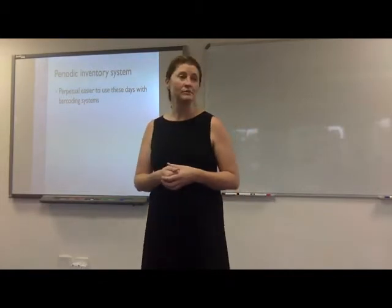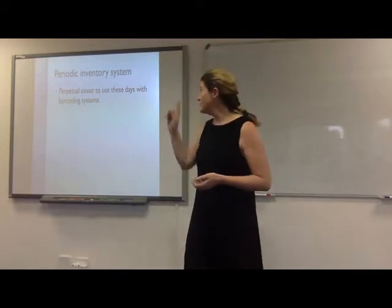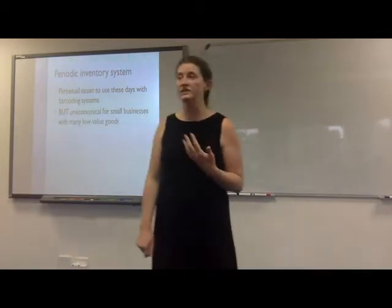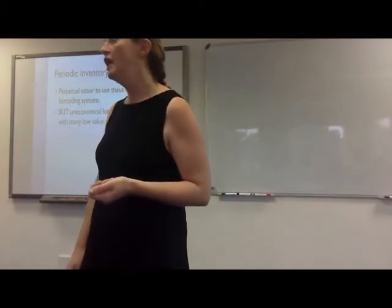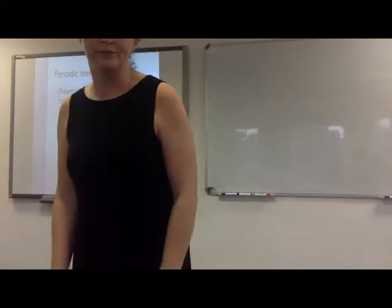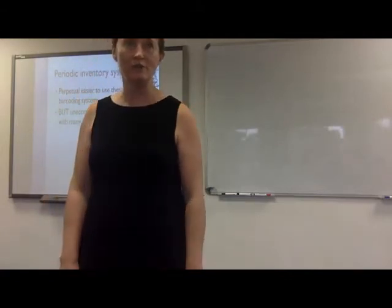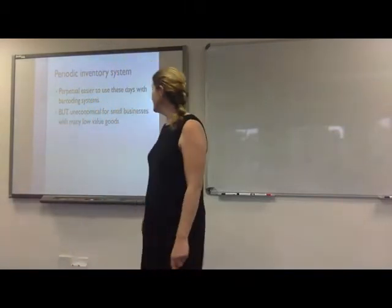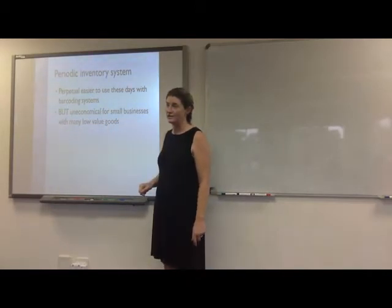There are still sometimes businesses that are smaller and maybe don't have a barcoding system. For them, the Periodic Inventory System is going to be much better. Obviously, if you're a small business and you don't have a barcoding system but you are selling cars, for example, then you don't need to use the Periodic System — you could still use Perpetual because you're only selling a few of this particular item. However, if you are a small business with many low value goods, in that case you are going to want to use the Periodic System.